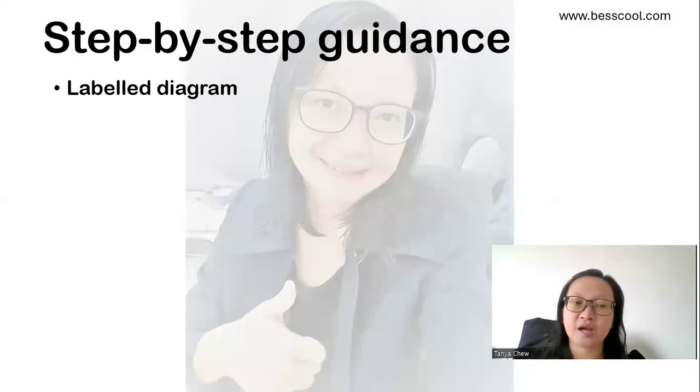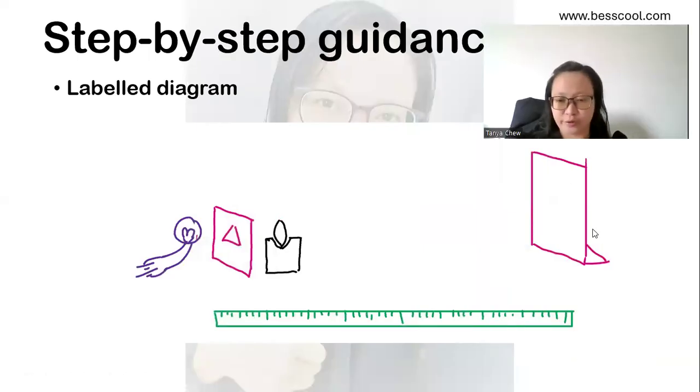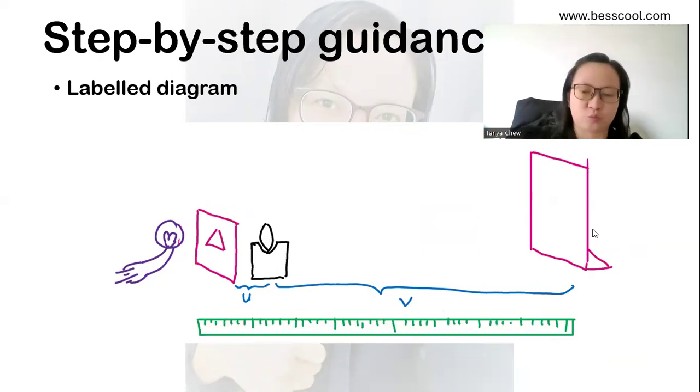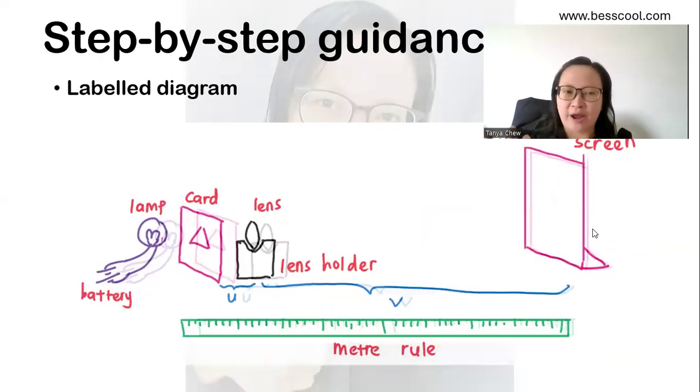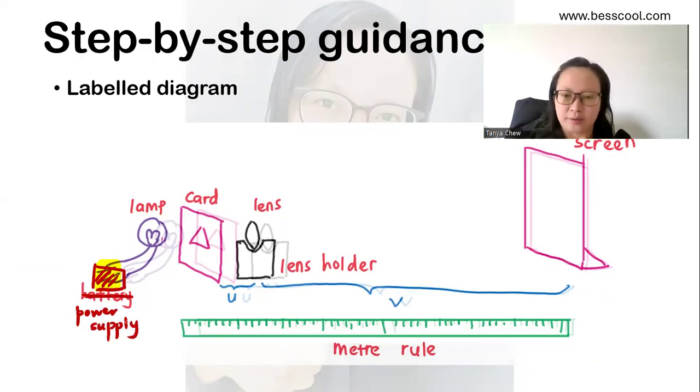So step-by-step guidance here. Since they ask us to draw a labeled diagram, I would want to draw my labeled diagram first. So these are all the things that I drew here. I have to state clearly where my U is and where is my V, how do I do measurement for V as well. And after that, I labeled everything here. But it seems like this is not a battery because they give me power supply. So I want you to change this to power supply because this is a 12-volt power supply. Remember? They did mention in the question. So this is my labeled diagram. I labeled out everything, the screen, the meter rule, because I have to use the meter rule to measure the U and the V.